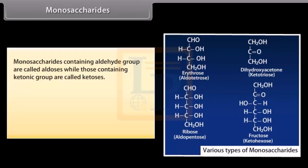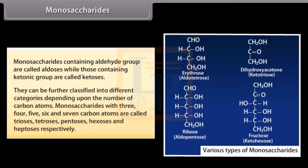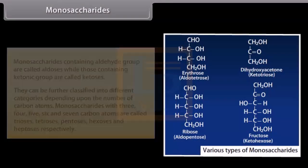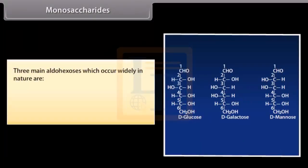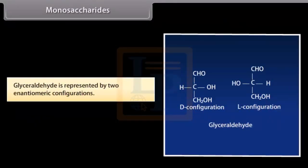Monosaccharides containing an aldehyde group are called aldoses, while those containing a ketonic group are called ketoses. They can be further classified depending upon the number of carbon atoms: monosaccharides with three, four, five, six, and seven carbon atoms are called trioses, tetroses, pentoses, hexoses, and heptoses respectively. Three main aldohexoses widely found in nature are D-glucose, D-galactose, and D-mannose. The letter D before the name of monosaccharides represents the configuration as derived from glyceraldehyde, which is represented by two enantiomeric configurations.